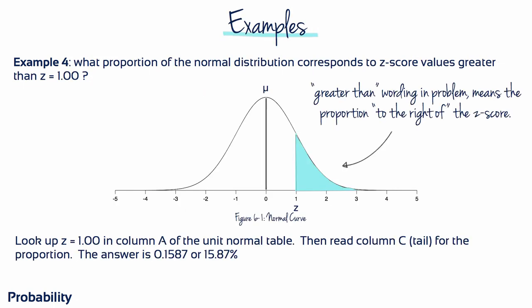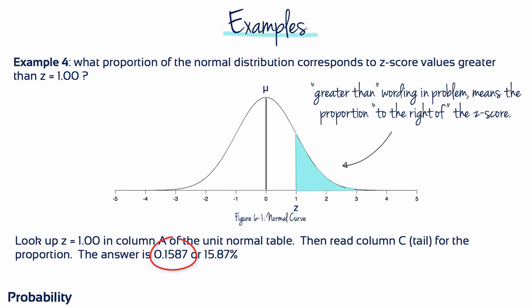Example 4: What proportion of the normal distribution corresponds to z-score values greater than z equals plus 1? Make a rough sketch, mark the mean and standard deviation, then mark z equals plus 1. The 'greater than' wording means the proportion we're trying to locate is to the right of the z-score. Looking up z equals 1 in column A and reading column C, the proportion is 0.1587 or 15.87%.